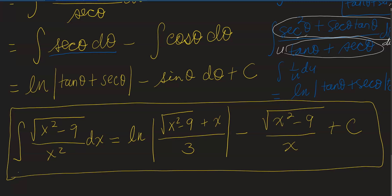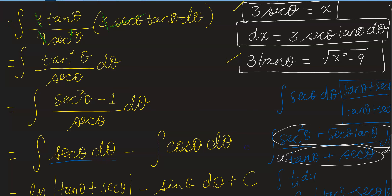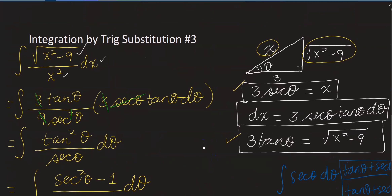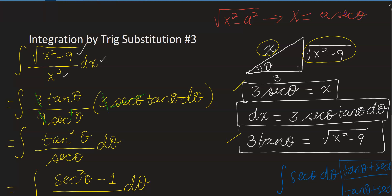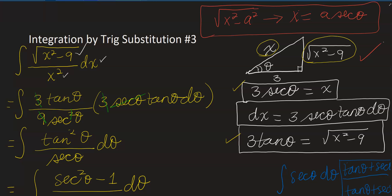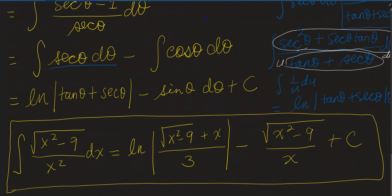This can get complicated, but the key takeaway is: when you have an integral involving the square root of x² minus a², use the substitution x equals a secant theta. With practice you will recognize it. Rather than memorizing, know how to draw your triangle, label all parts, and figure out the substitution. And don't forget your trig identities as well.